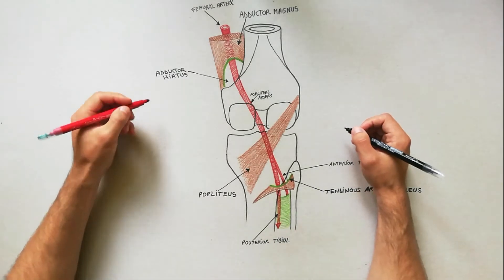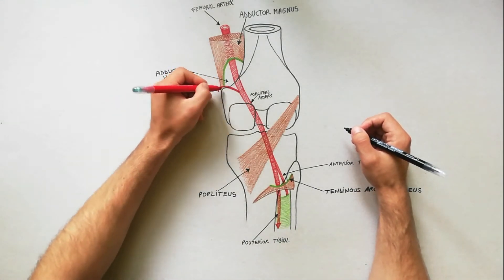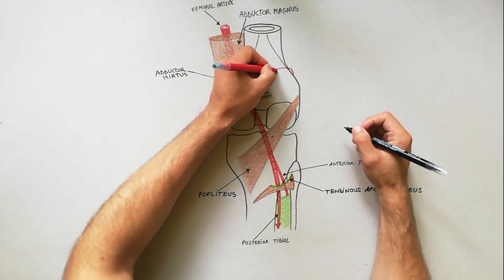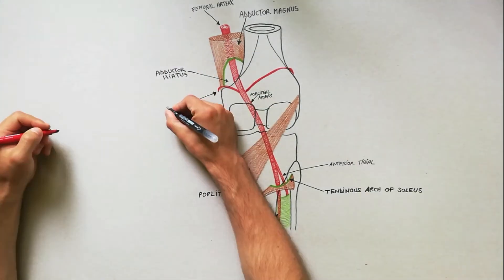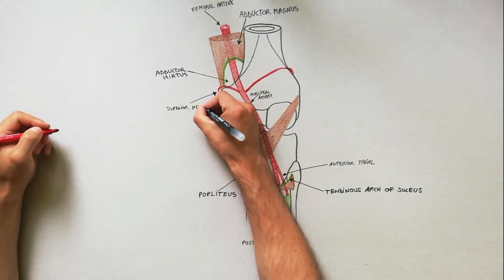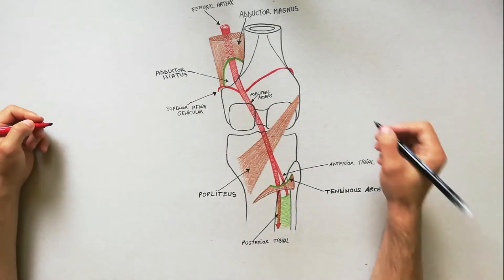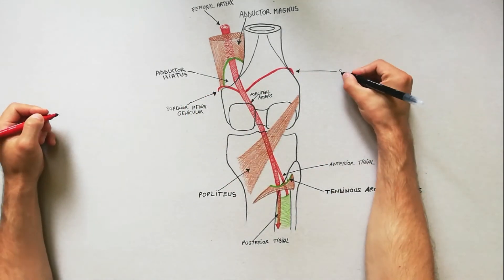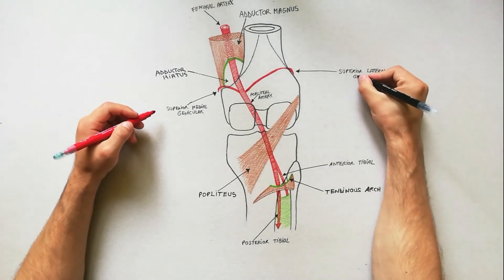Five genicular branches of the popliteal artery supply the capsule and ligaments of the knee joint. The superior medial and superior lateral genicular arteries wind around the corresponding side of the femur immediately above the corresponding femoral condyles and take part in the formation of the genicular anastomosis.